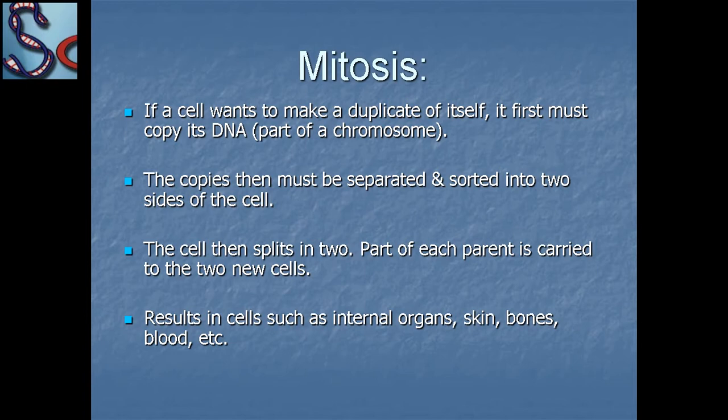Part of each parent is carried to the two new cells, resulting in cells such as internal organs, skin, bones, blood, and so on.